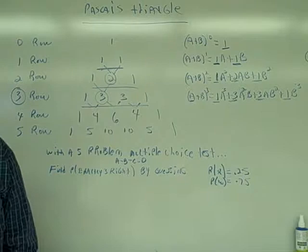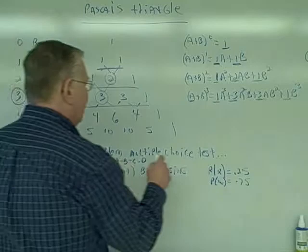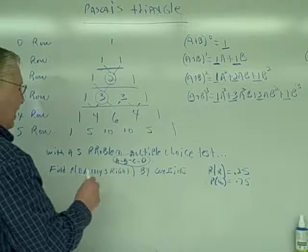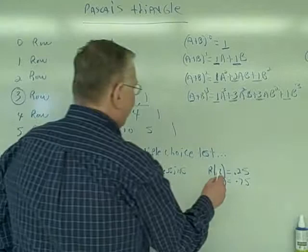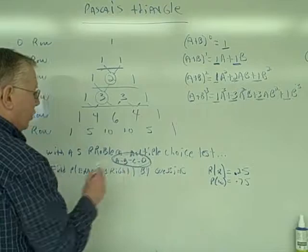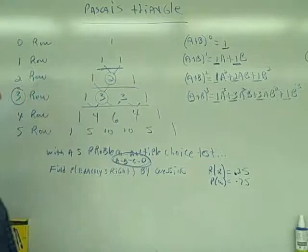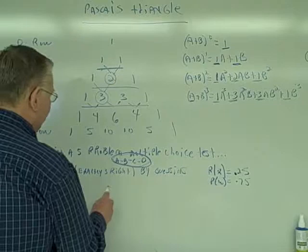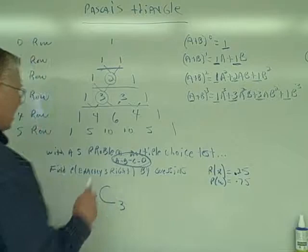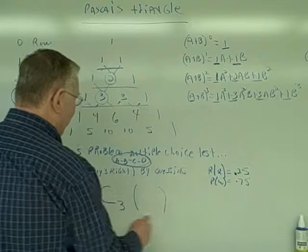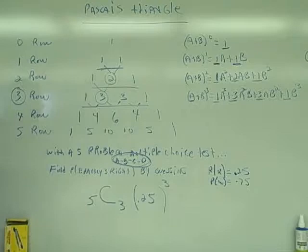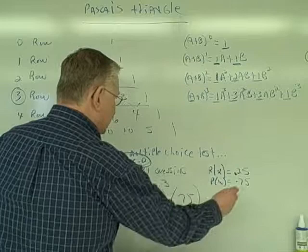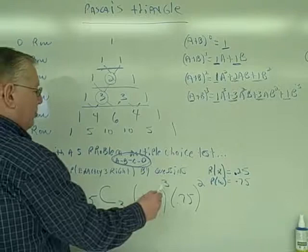So again, what good is it? Well, we're going to do a problem here. We're going to have a five-problem multiple choice test where we're going to have answers a, b, c, and d. I want the probability of getting exactly three right by guessing. The probability of getting one right is 0.25, which is one out of four. And the probability of getting one wrong is 0.75, or three out of four.